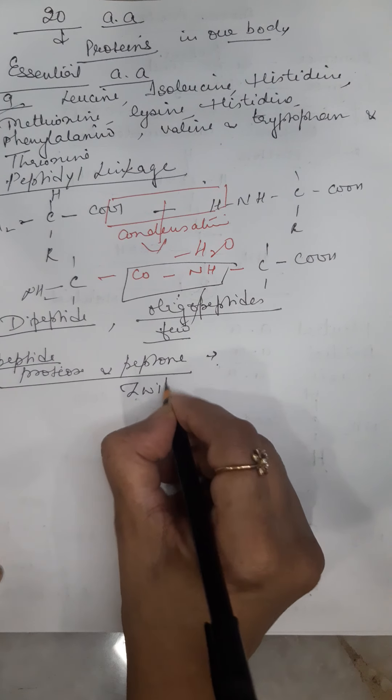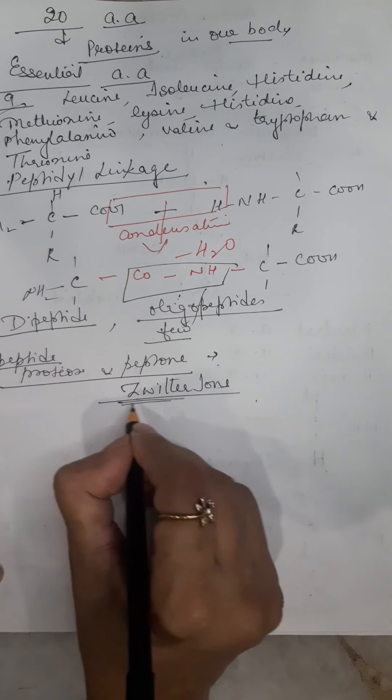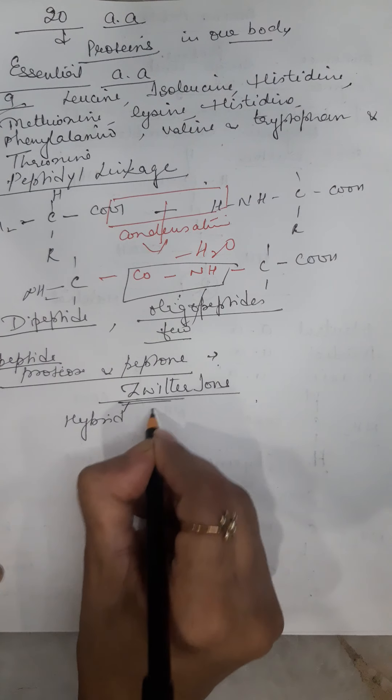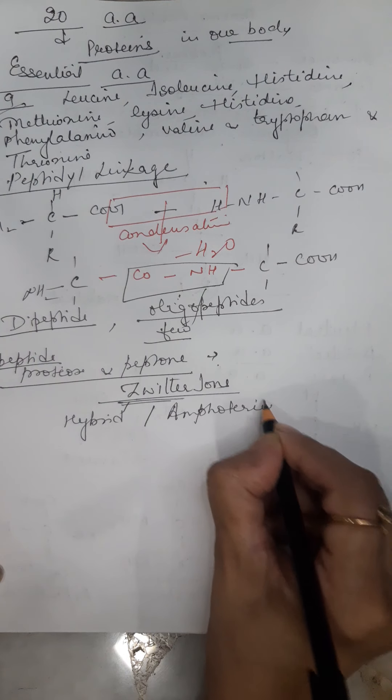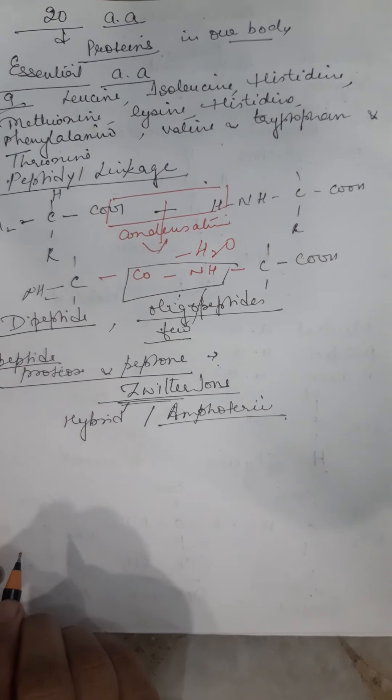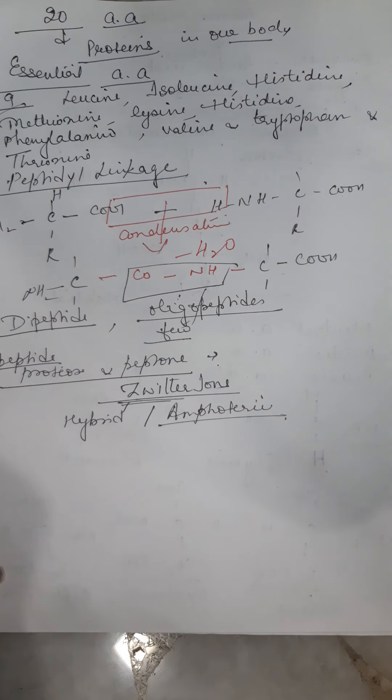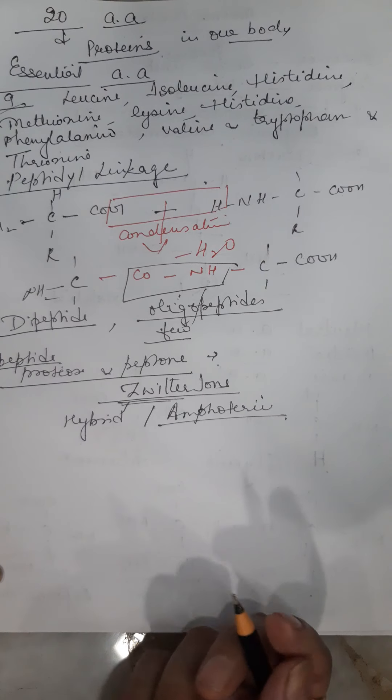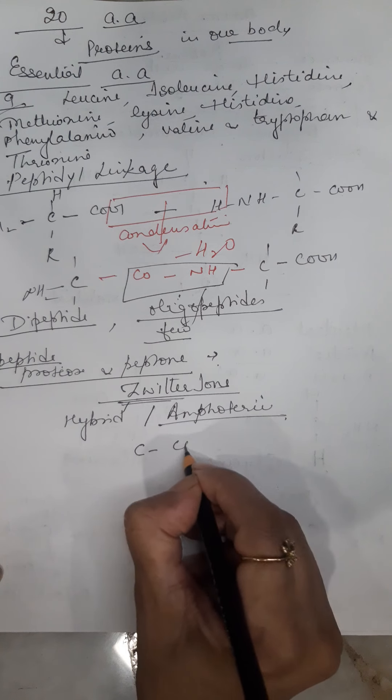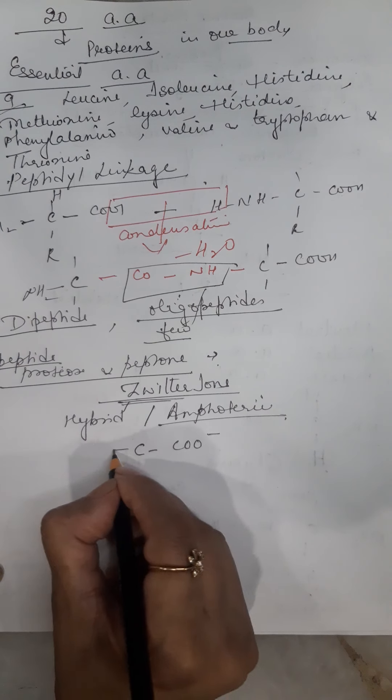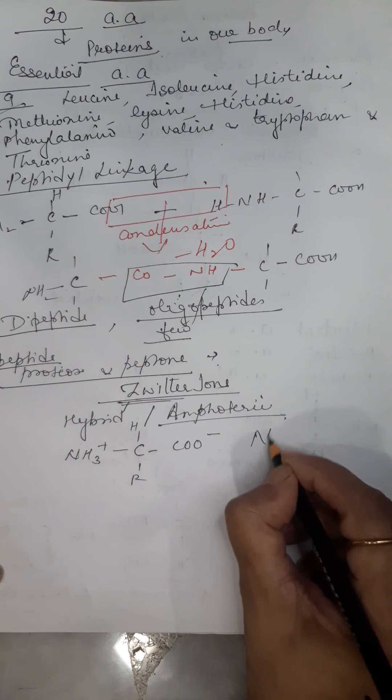Another very important property shown by amino acids is that they exist as zwitter ions. What are zwitter ions? The word zwitter means hybrid or amphoteric - a molecule that shows both positive as well as negative ions. One end has the positive ion, another end has the negative ion. So overall, it is neutral. As in case of amino acid, the carboxyl can show negative and amino group positive, and overall it is neutral.